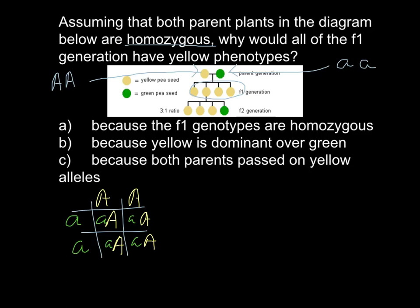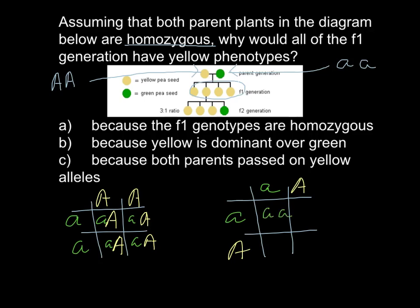They express the same phenotype as the parent that provided the dominant allele. Now what happens in the F2 generation? In the F2 generation we cross the heterozygous progeny of the parents — that is the F1 generation — which is small a and large A crossed with small a and large A. So the Punnett square gives us AA, Aa, Aa, and aa.